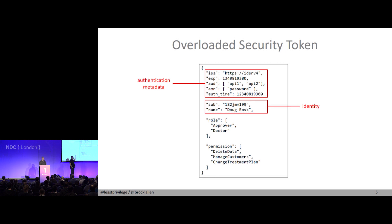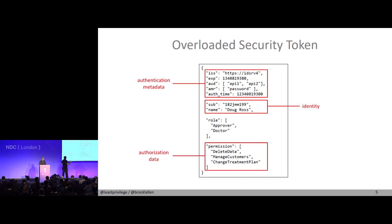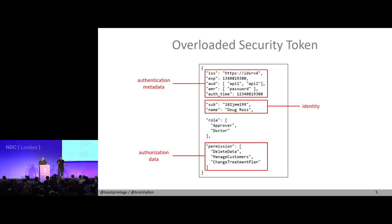Then we have clear identity information: the subject ID, the unique ID of the user, maybe a name, email address. But then we also have authorization data — like 'delete data,' 'manage customer,' 'can change the treatment plan' — that's all around a hospital scenario from one of our customers. That is clearly violating the separation. And then there's a gray area in the middle, which are roles.